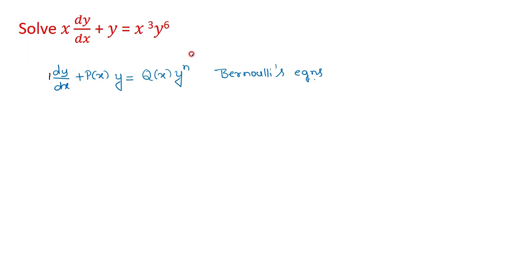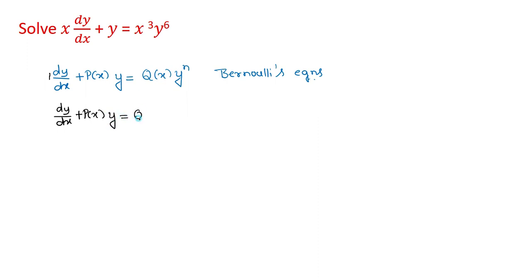Therefore, we will reduce this equation into the form of Bernoulli's equation first. The solution of Bernoulli's equation is obtained by reducing the equation to the linear differential equation of the form dy/dx plus p(x)·y equal to q(x). This is called a linear differential equation.